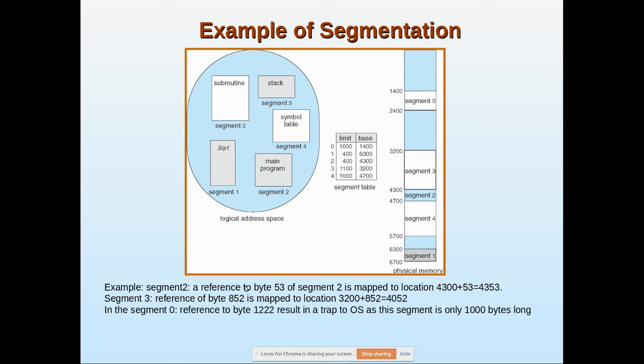In segment 2, a reference to byte 53 is mapped to location 4300 plus 53, which equals 4353. In segment 3, a reference to byte 852 is added to the base 3200, giving 4052, because segment 3 has a length of 1100.